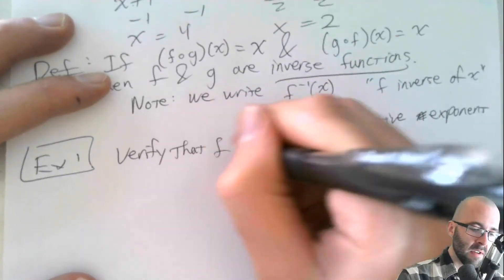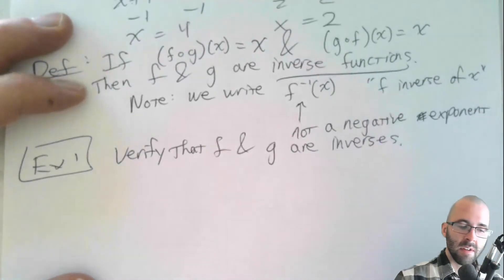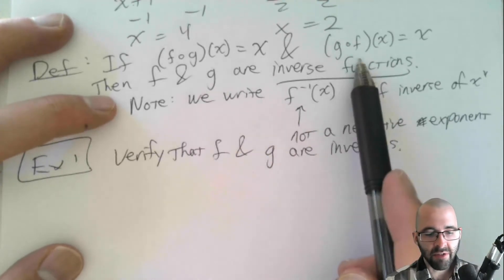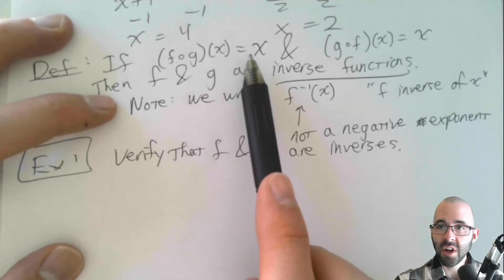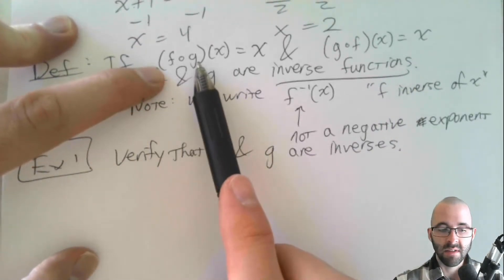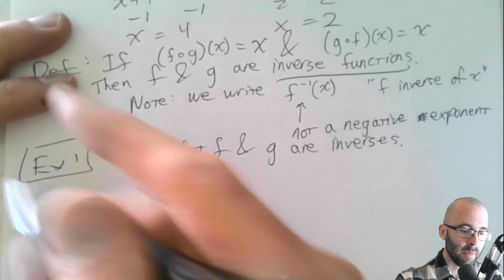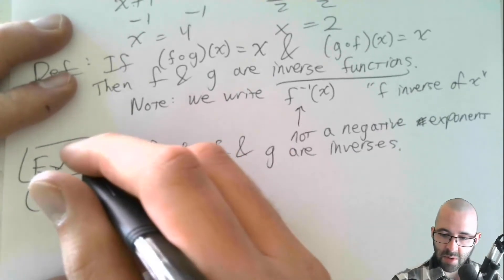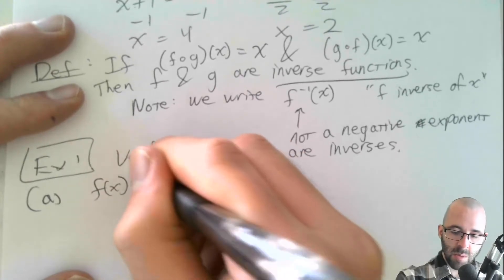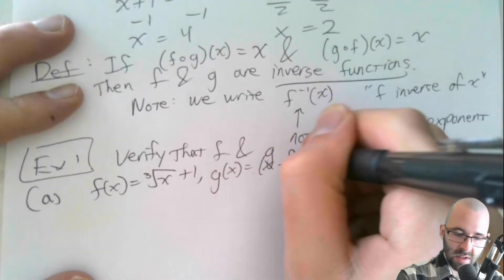Example one: verifying that f and g are inverses. Going back to the definition, they're inverses if their function compositions undo each other and we're just left with x. So we're going to find f of g — hopefully it equals just x — and also find g of f — hopefully just equals x. If f(x) = ∛(x+1) and g(x) = (x−1)³, we start with the simpler direction.